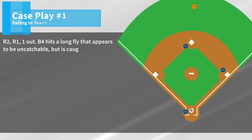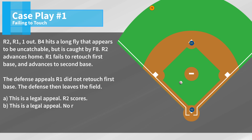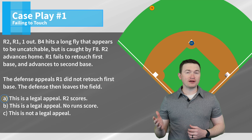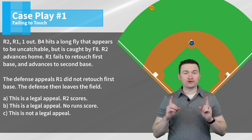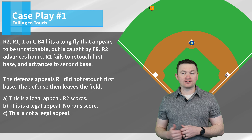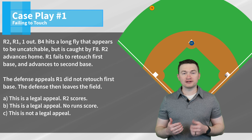Case play one: R2, R1, one out. B4 hits a long fly that appears to be uncatchable, but is caught by F8. R2 advances home. R1 fails to retouch first base and advances to second. The defense appeals R1 did not retouch first base, then leaves the field. The correct answer is A — this is a legal appeal and R2 is going to score. On this play the batter is out because it's a caught fly ball, so the out back at first is a time play and not a forced play. Since R2 crossed the plate before the appeal of first, R2's run is going to count.